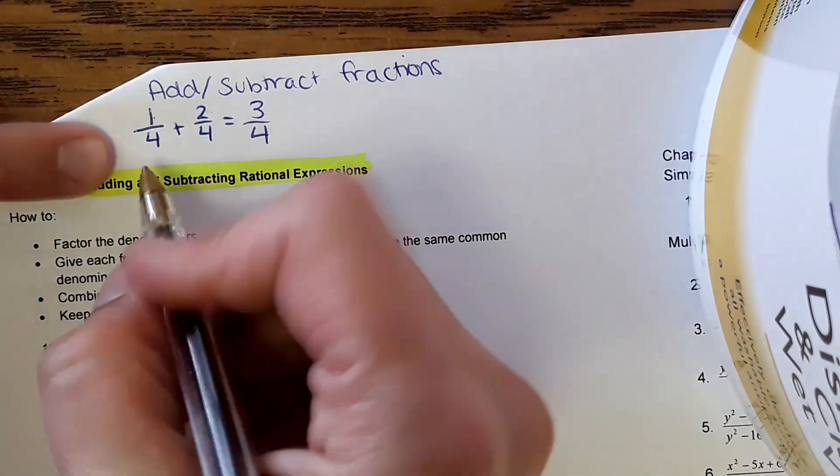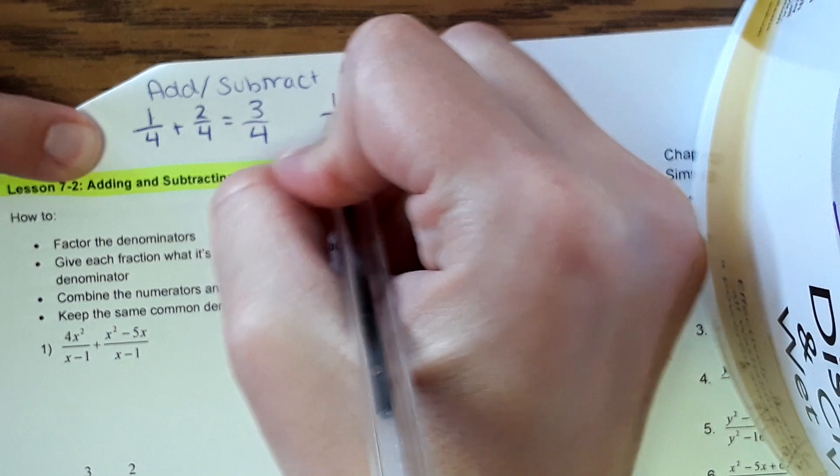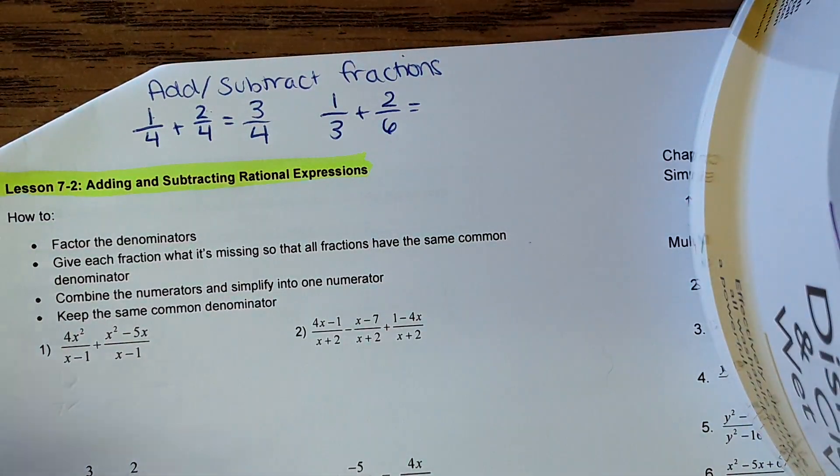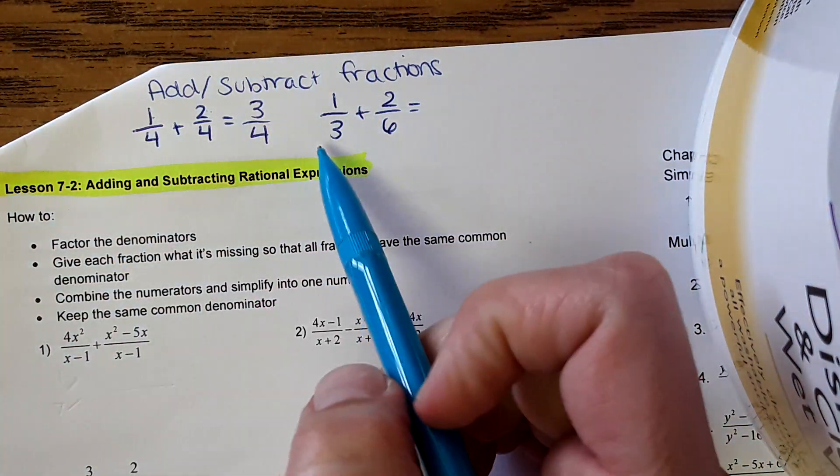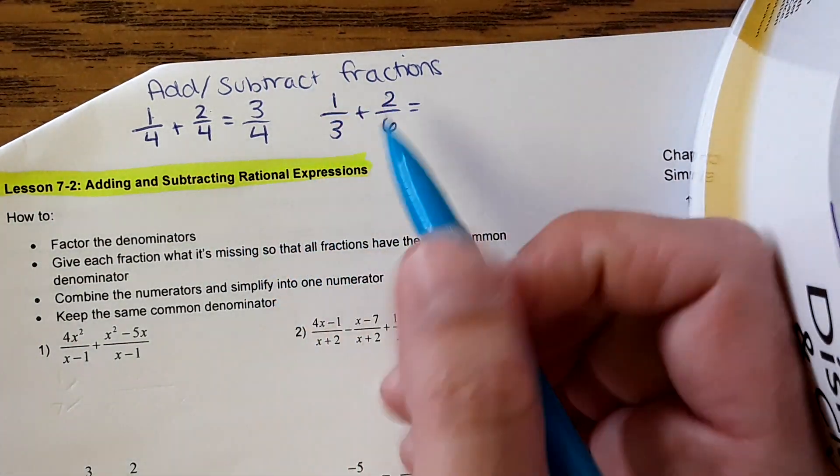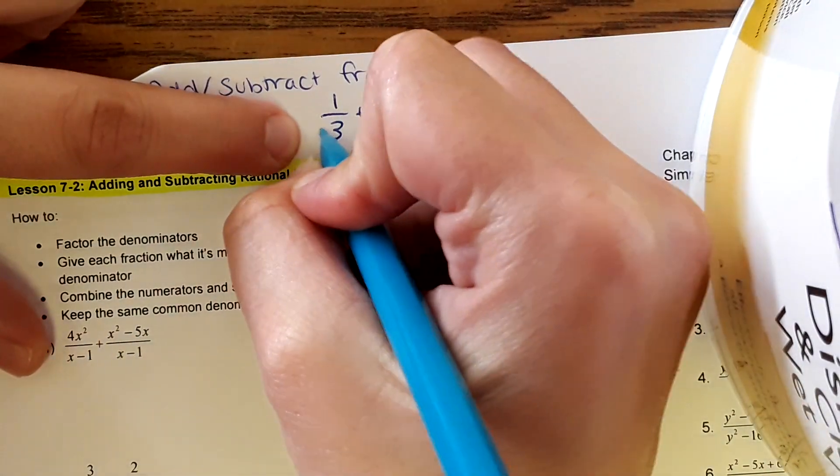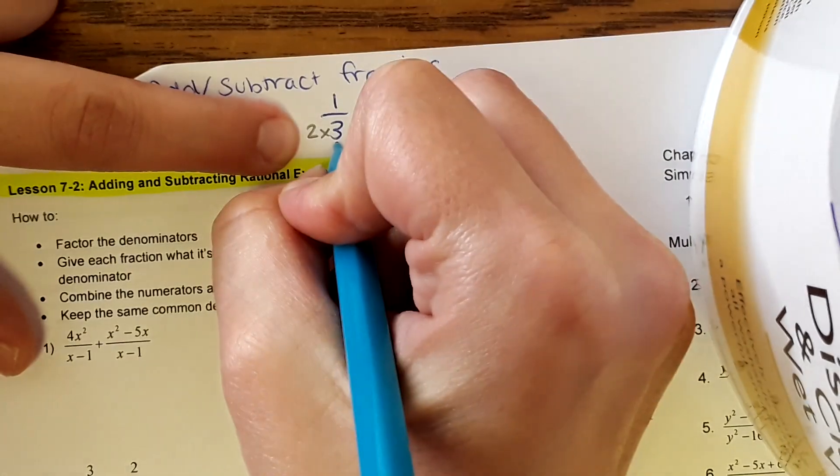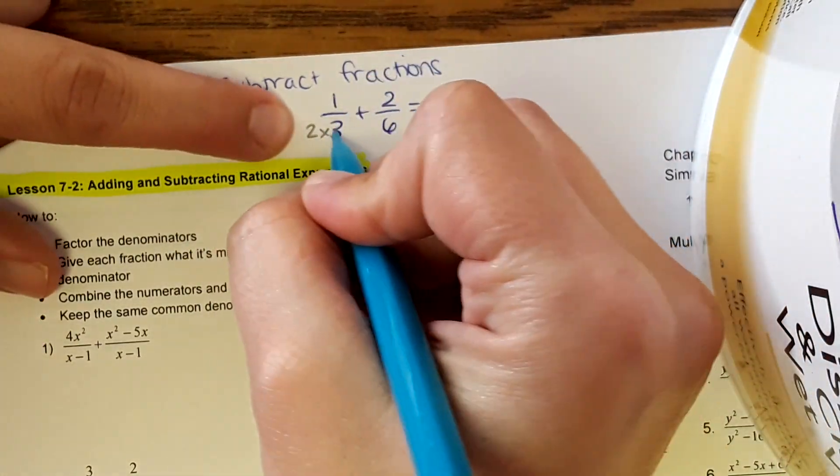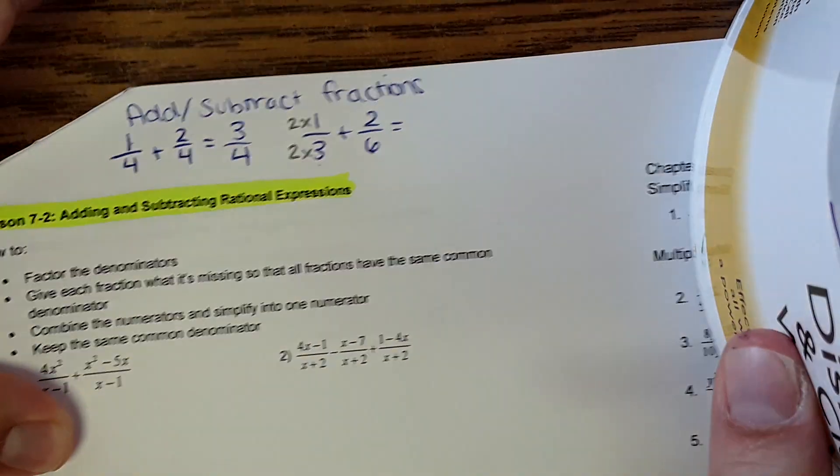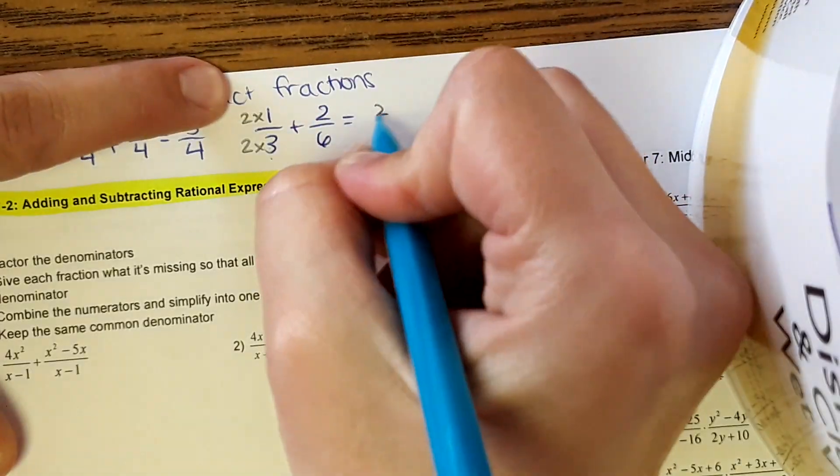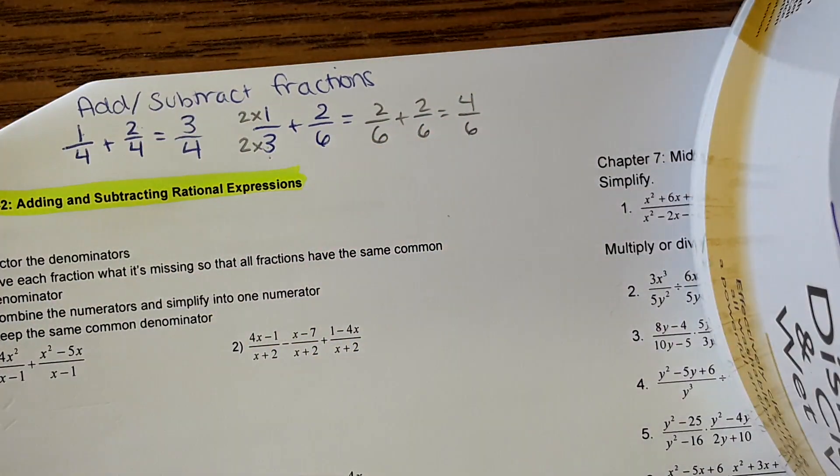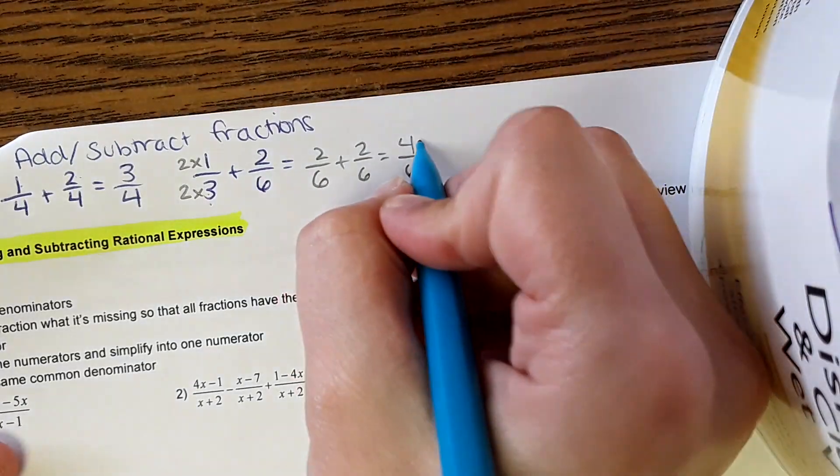If, for whatever reason, you didn't have a common denominator, so let's say you're given 1/3 plus 2/6, then you would have to make sure that you have a common denominator before adding the numerators. The way you would get a common denominator is you'd multiply this by something to get it to look like this. So we'd multiply this by 2 to get 6, and whatever you do to the bottom number, you have to do to the top. So then you would rewrite it as 2/6 plus 2/6, and get 4/6, and then of course simplify if you could.